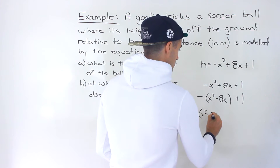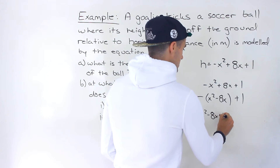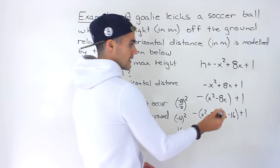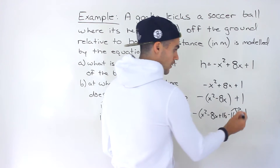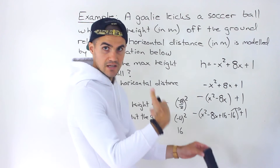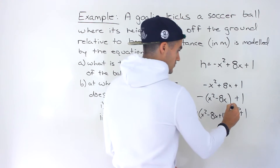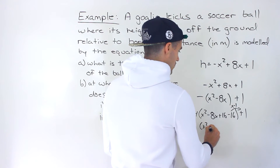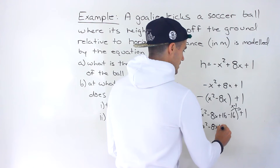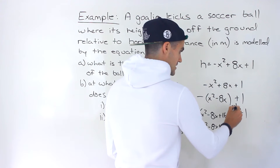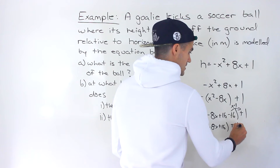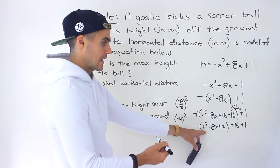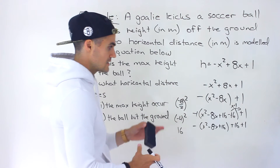So then we add 16 and subtract 16, with the plus 1 still at the end. Then we take out that negative 16 from the bracket, but when you take something out of the bracket you've got to multiply it by what's in front — in this case negative 1. So we end up with x squared minus 8x plus 16 inside the bracket, and then negative 16 times negative 1 gives us positive 16, plus positive 1.